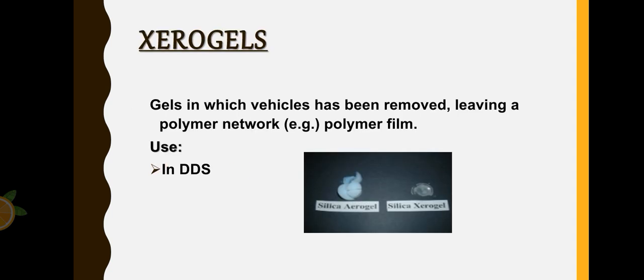Aerogels are gels that are formed by removing the vehicle or the outer aqueous phase. As a result, we only have a network that's left. Its use is in DDS. And as you can see here we have silica aerogel and the other is silica xerogel. You can see the difference - in xerogel it's only the network, there's no aqueous phase, it's not bulky.